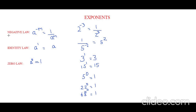In this video, we have learned three laws: the negative law, which is a to the power of minus m equals 1 by a to the power of m; the identity law, which is a to the power of 1 equals a; and the zero law, which is a to the power of 0 equals 1. Isn't it very easy? For more tips and tricks, do like and subscribe to my channel. Thank you.